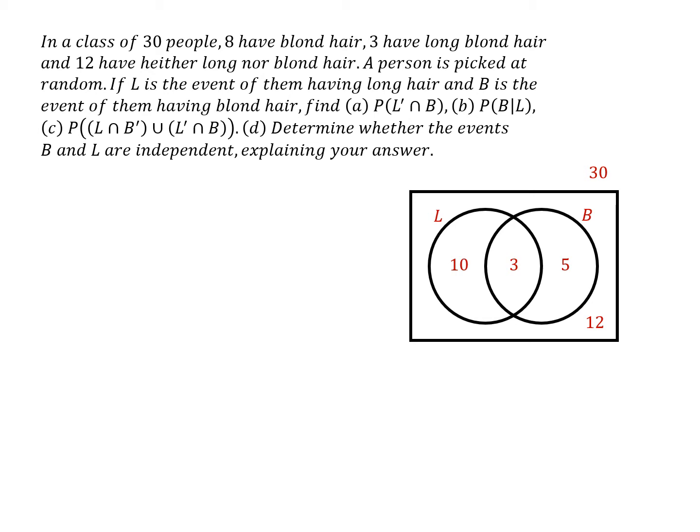The first question we've got to answer is the probability of not long and blonde. So we can't be any of those people in the long section, but it has to be in the blonde area. There are just 5 out of a total of 30 people, so the probability of not long and blonde is 5/30.